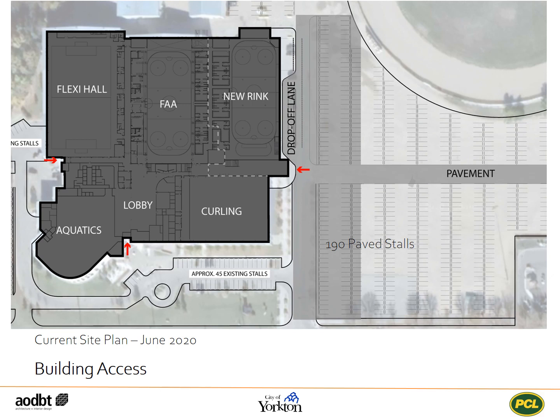This overall context plan identifies the site and public entry points into the Gallagher Centre. The new east entry, located closest to the east parking lot, will lead into the new rink and connect to the other amenity spaces. Further site details are provided in the site context video.